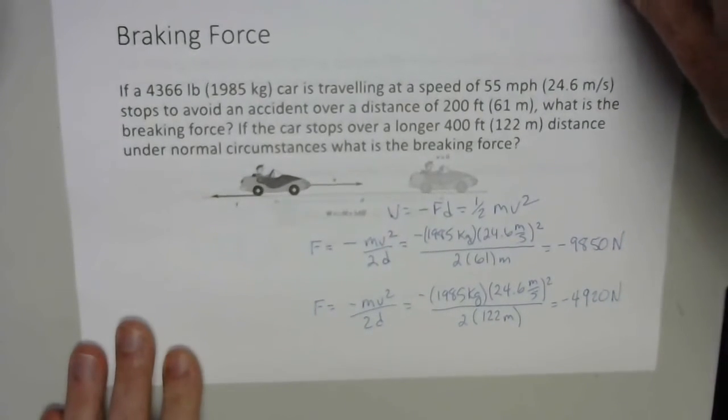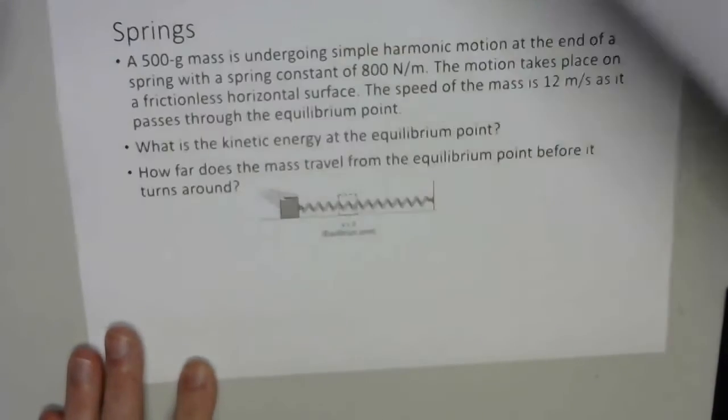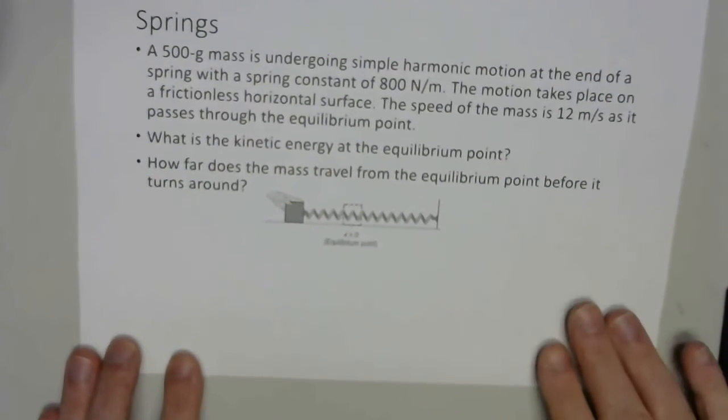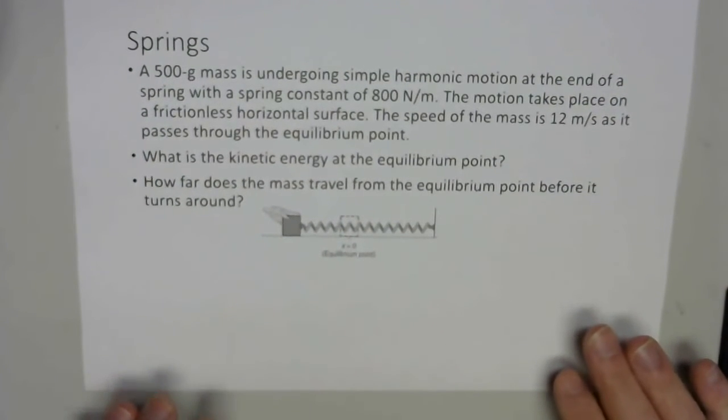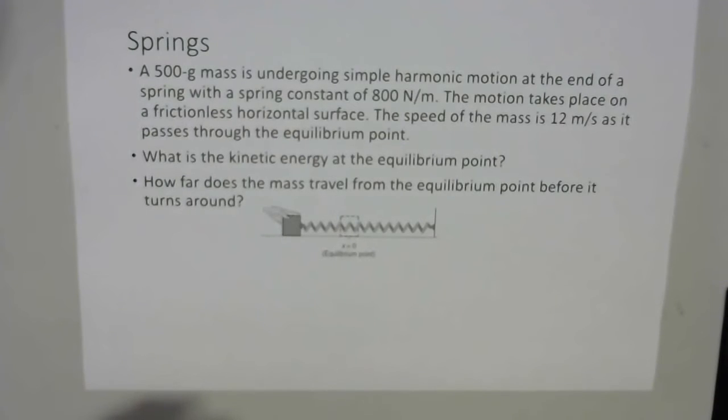So let's look at the next problem. This is a case of potential energy in the case of a spring. You got a 500-gram mass undergoing simple harmonic motion when placed at the end of a spring of 800 newton meters. If the motion takes place on a frictionless horizontal surface, the speed of the mass is 12 meters per second as it passes through the equilibrium point.